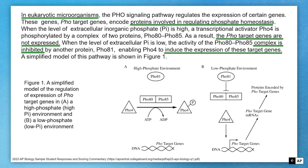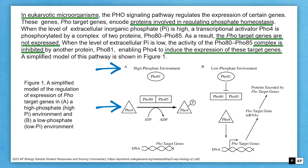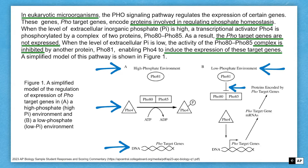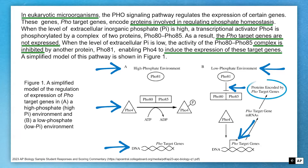A simplified model of this pathway is shown in Figure 1, with pathway A showing a high phosphate environment and pathway B showing a low phosphate environment. In the high phosphate environment, PHO4 is phosphorylated by the PHO80/PHO85 complex and therefore does not interact with the target genes. In the low phosphate environment, PHO81 inhibits the PHO80/PHO85 complex, so PHO4 can interact with the target genes and encode them into proteins.